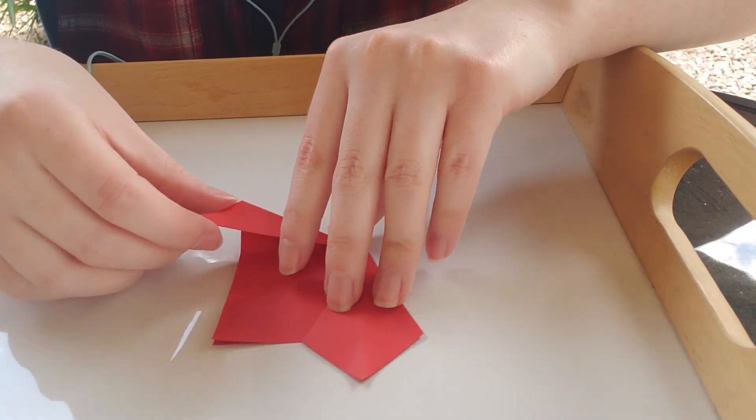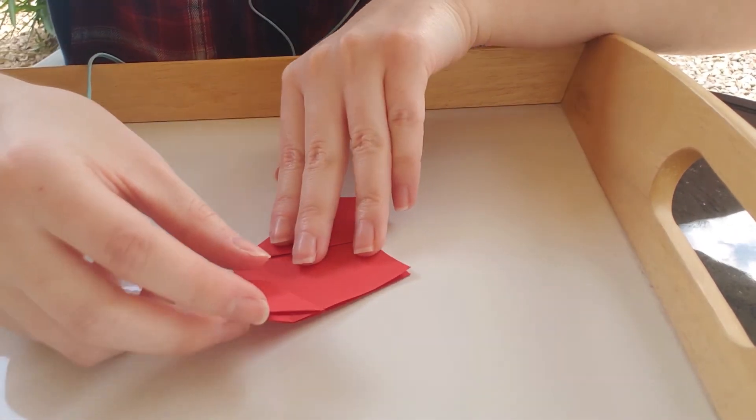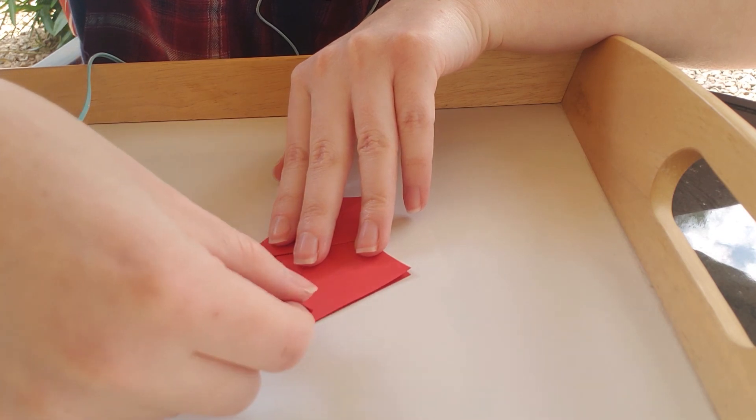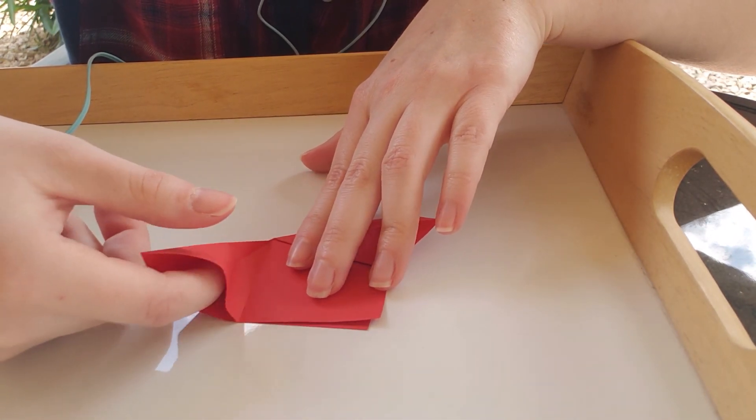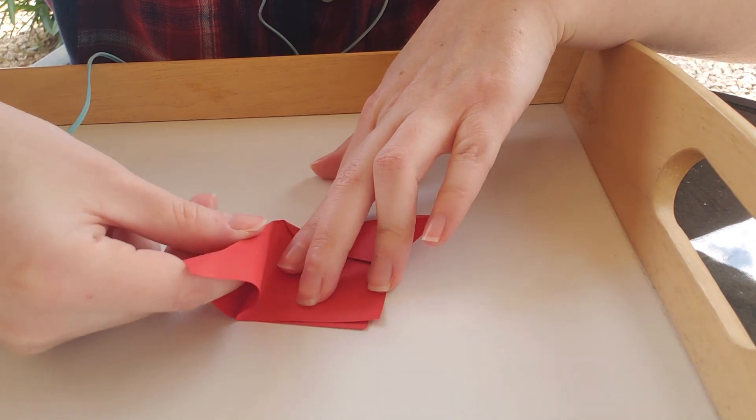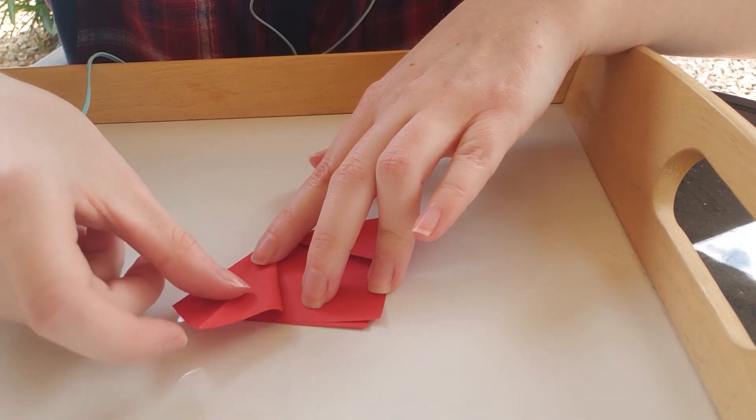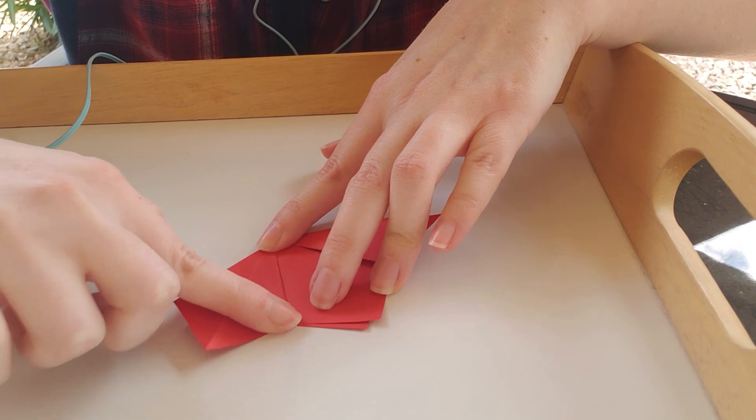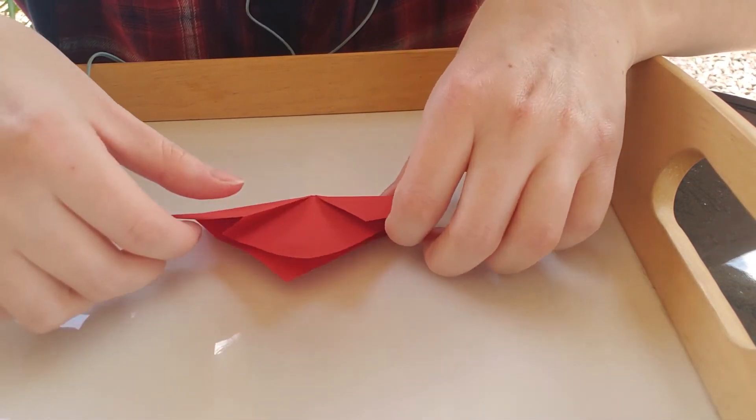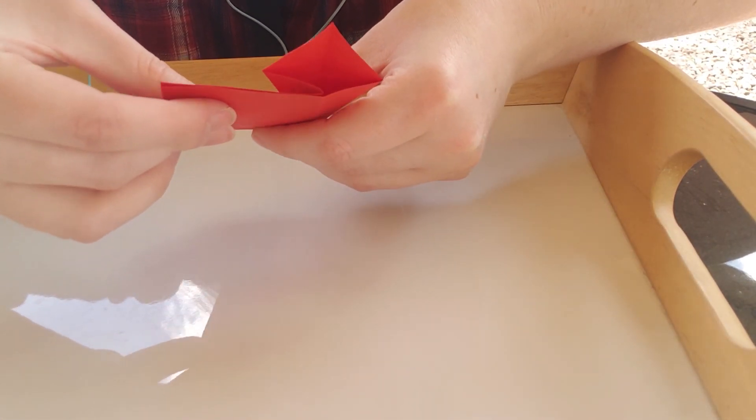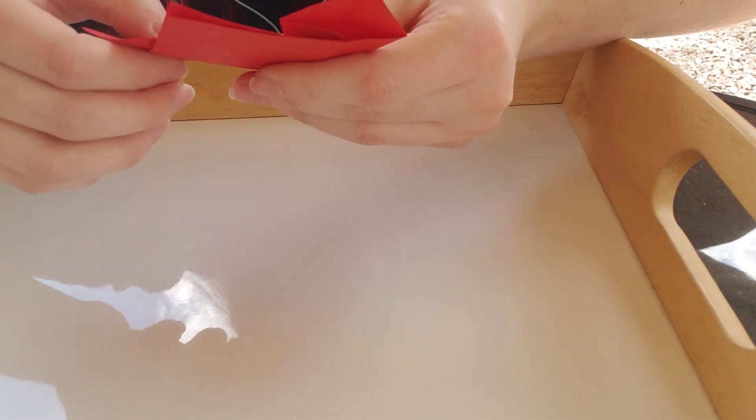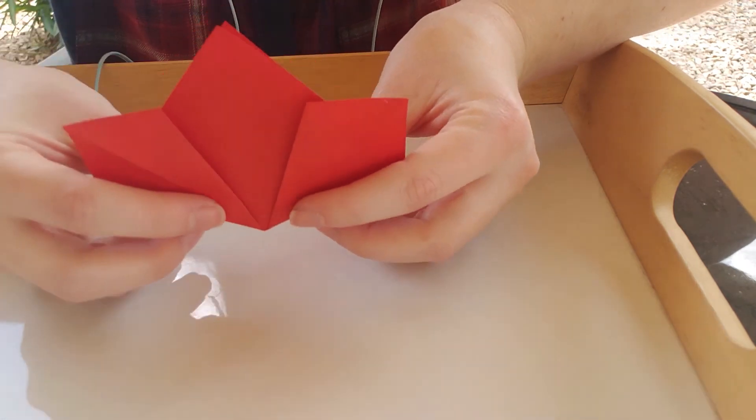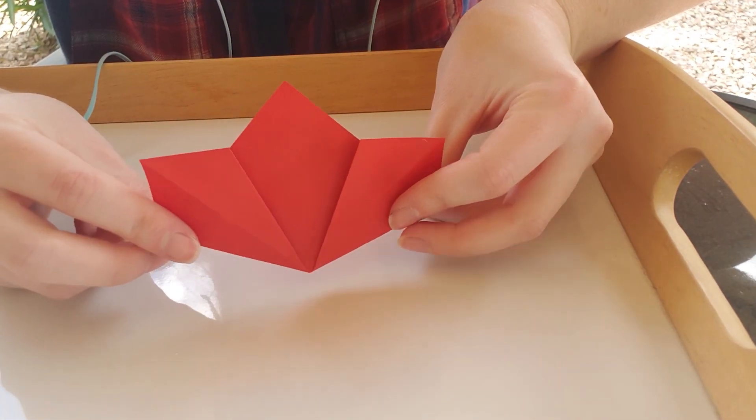And then we'll do the other one. So again stick your finger in this little pocket here. Puff it up and then bring it down. Fold it down. Fold it. So it will in the end look like this, like a little fan.